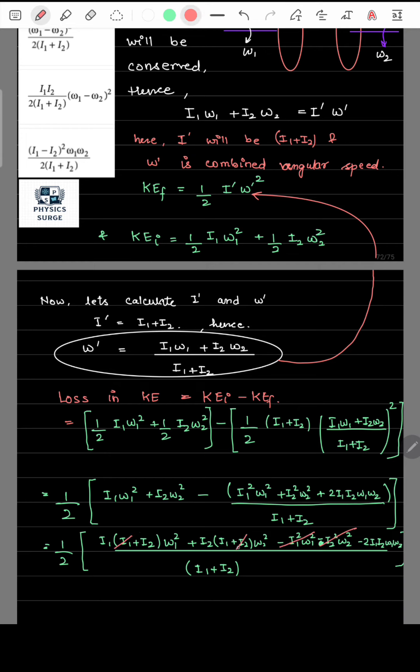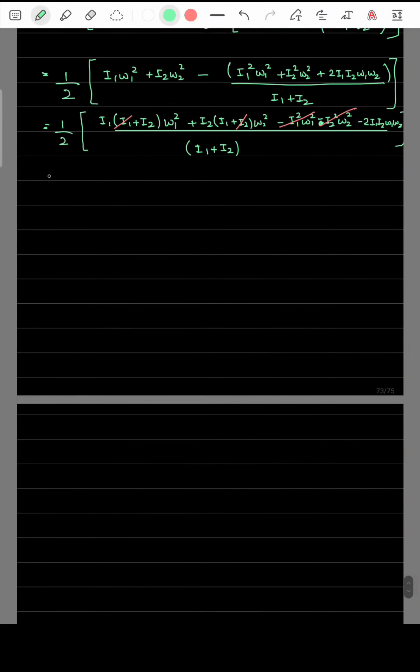Now, we cancel out the i1 square omega 1 square and i2 square omega 2 square. After this, we get the remaining terms as shown.